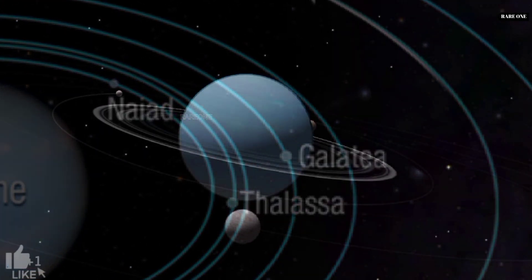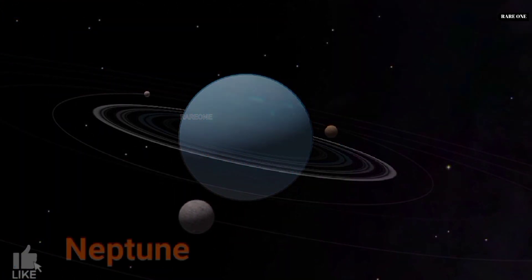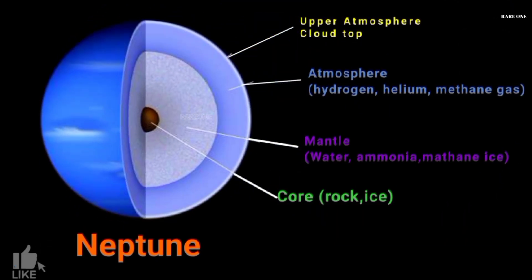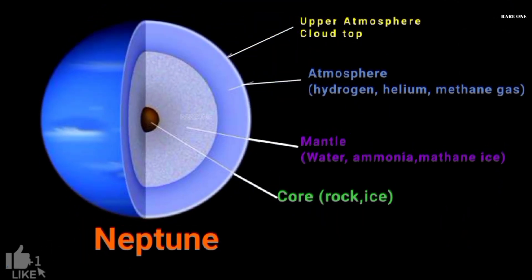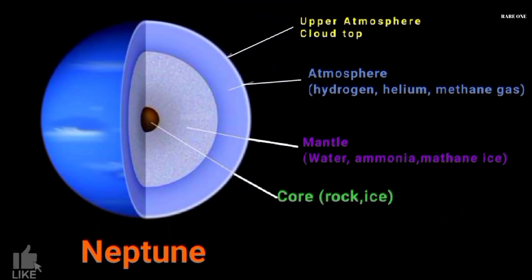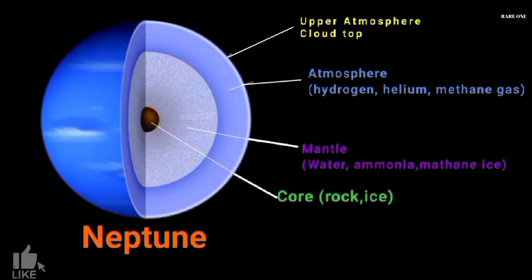Like its neighbor Uranus, Neptune is an ice giant, primarily composed of icy materials like water, methane, and ammonia. However, unlike the gaseous Jupiter and Saturn, Neptune is incredibly dense.